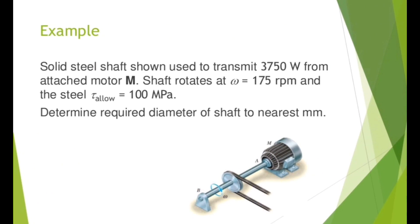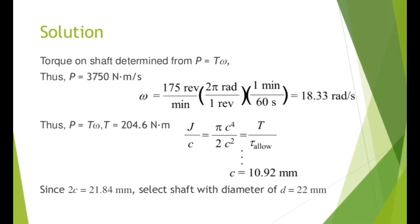Example: a solid steel shaft is used to transmit 3750 watts from an attached motor M. The shaft rotates at 175 rpm and the allowable steel shear stress is 100 MPa. Determine the required diameter of the shaft to the nearest mm. Torque is found from P = T*omega, where P = 3750 W and omega = 175 rpm × (2*pi / 60) = 18.33 rad/s.